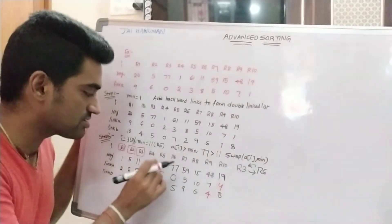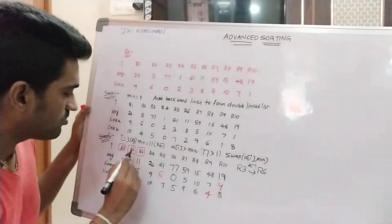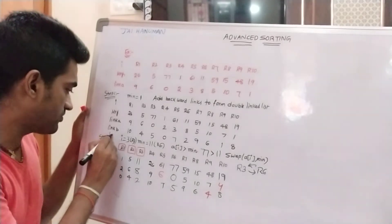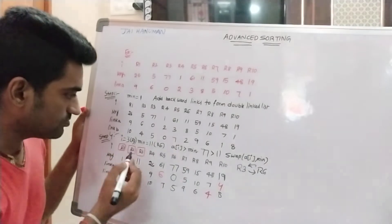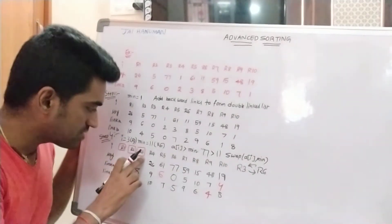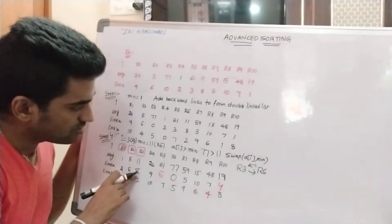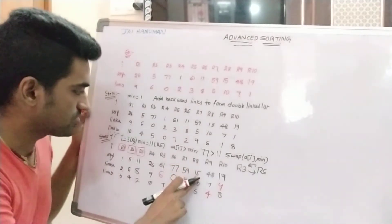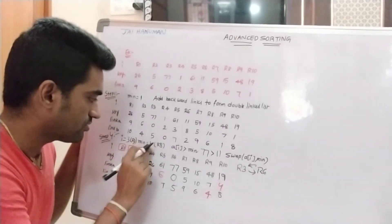After completion of Step 3, we move to Step 4. In Step 4, first we find out the minimum value. The already-swapped record is R3, so R3's link here is 8 — go to R8 record. Minimum value is 15, so minimum value is R8 with value 15.